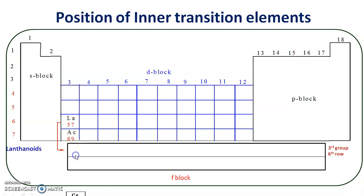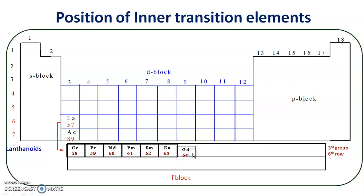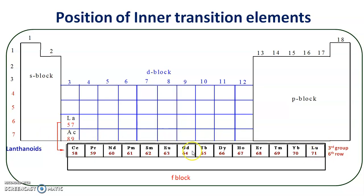The lanthanides are: cerium (atomic number 58), praseodymium, promethium, samarium, europium, gadolinium, terbium, dysprosium, holmium, erbium, thulium, ytterbium, and lutetium (atomic number 71). So these are the lanthanides — 14 lanthanides plus lanthanum, making 15 elements altogether. These are all placed at the same position, that is third group and sixth row.